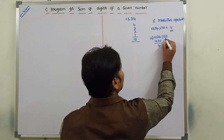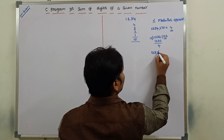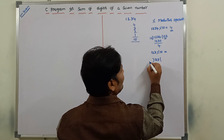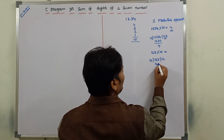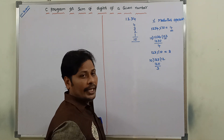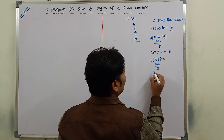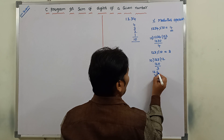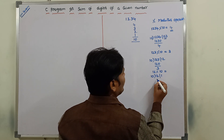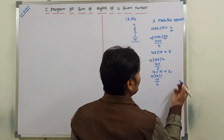Next, I am taking the number 123 modulus operator 10. So 123 is divided by 10; we are getting the remainder 3. Next, I am taking 12 modulus operator 10. 10 divides 12 one time, remainder value 2. So now we are getting 2.